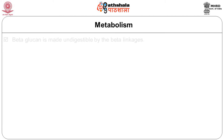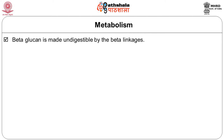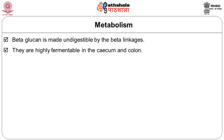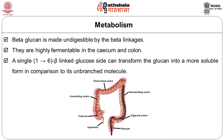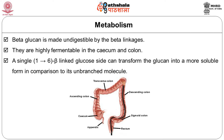Regarding the metabolism of beta-glucan: beta-glucan is made undigestible by its beta linkages. It is highly fermentable in the cecum and colon. Degree of polymerization greater than 100 means it is completely insoluble in water. This conformation allows for stronger interactions and associations between chains and water molecules. The composition of side-substituted branches and the frequency of those branches also determine the solubility of beta-glucan molecules. A single 1-to-6 beta-linked glucoside can transform the glucan into a more soluble form compared to its unbranched molecule.